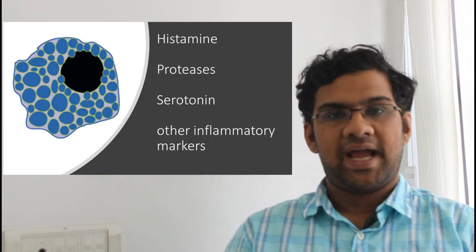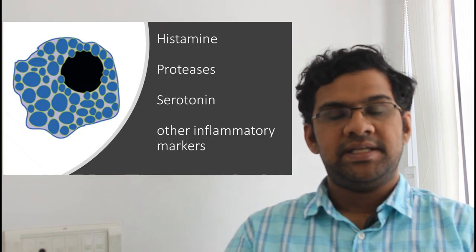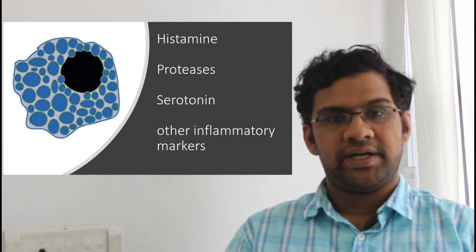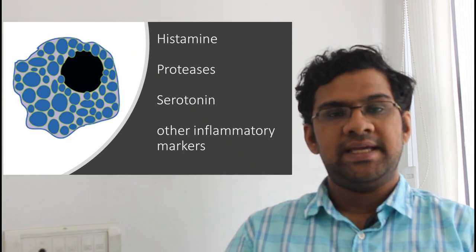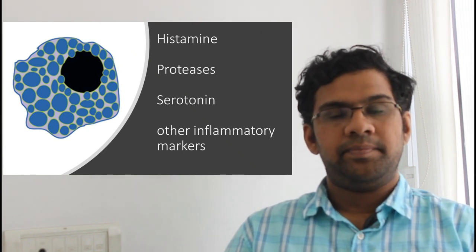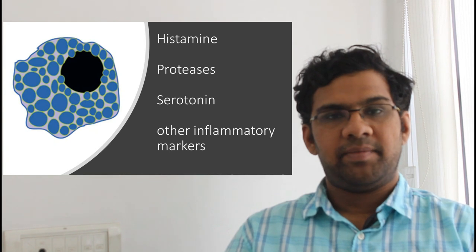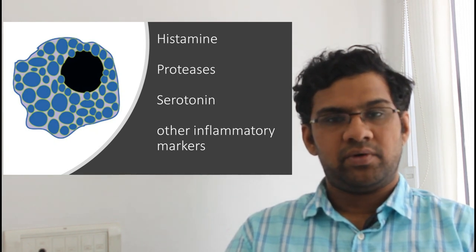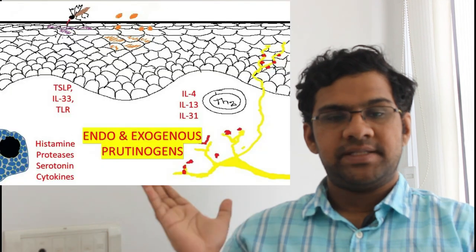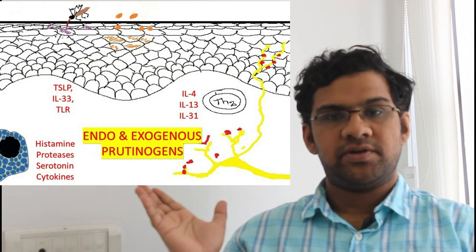The cells which play a major role in itch sensation are mast cells, basophils, keratinocytes, and immune cells. Upon activation by varied responses, the mast cells degranulate to release substances like histamine, serotonin, proteases, and other inflammatory markers or cytokines that play a role in itch signaling pathways.